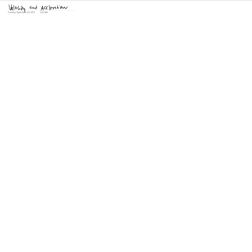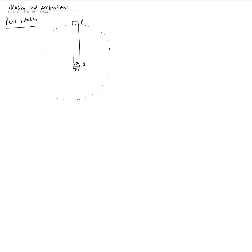In this video we will talk about velocity and acceleration for rigid bodies under pure rotation. If we have a beam doing a pure rotation about point O, we focus on a particular point P. This point P is going to be traversing a circular path as the beam rotates, with O as the center. If it is allowed to do a full 360-degree rotation, that would be the path you would see with O as the center.